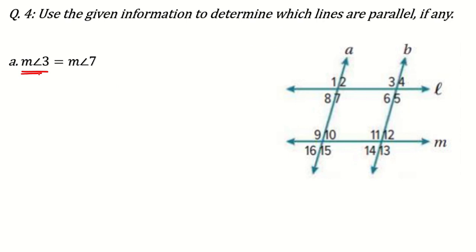Here they say measurement of angle 3. So where is angle 3? This is angle 3 and angle 7. They are equal to each other. Now what type of angles are they? They are alternate interior angles. So they are equal means these two lines will be parallel to each other. So line A will be parallel to line B. By this statement we can conclude this result that A line will be parallel to B line. Why? Because alternate interior angles are equal.